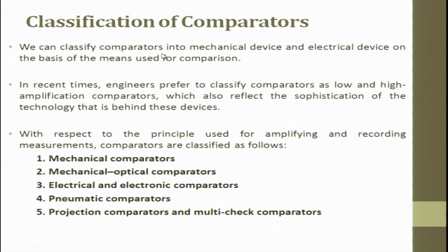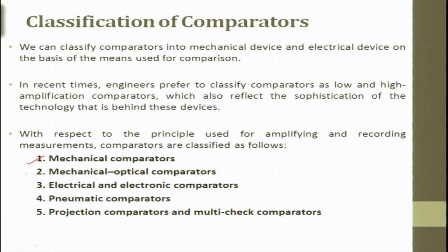We can classify comparators into mechanical and electrical devices on the basis of the means used for comparison. In recent times engineers prefer to classify comparators as low and high amplification comparators, which reflects the sophistication of the technology behind these devices. They are classified as: mechanical comparator, mechanical optical comparator, electrical and electronic comparator, pneumatic comparator, and finally projection comparator and multi-check comparator — classified on the principle for amplifying and recording measurements.